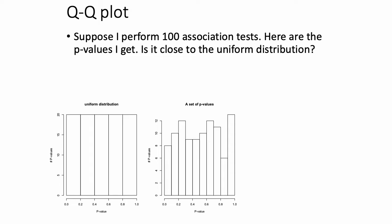A QQ plot is essentially a scatter plot that gives you a visual indication of how close your distribution of p-values is to the uniform distribution. Here I'm showing an example of an actual p-value distribution you might get if the null hypothesis is always true and you did 100 independent tests. Even when the p-value distribution should look uniform, it never actually does in practice because of stochasticity.